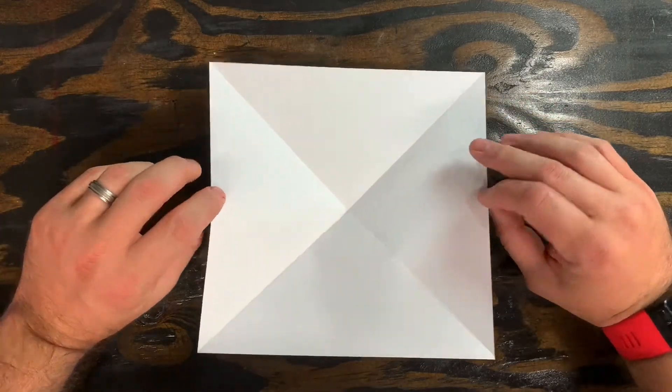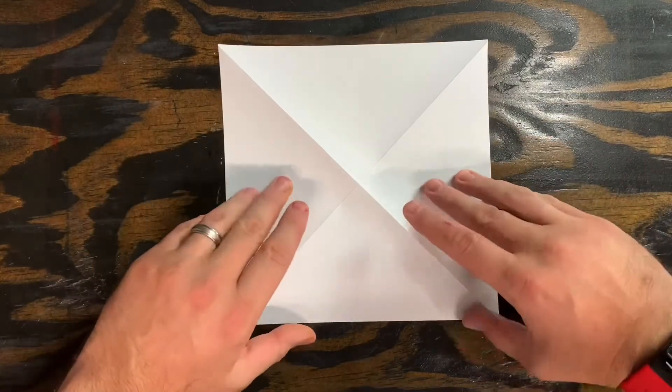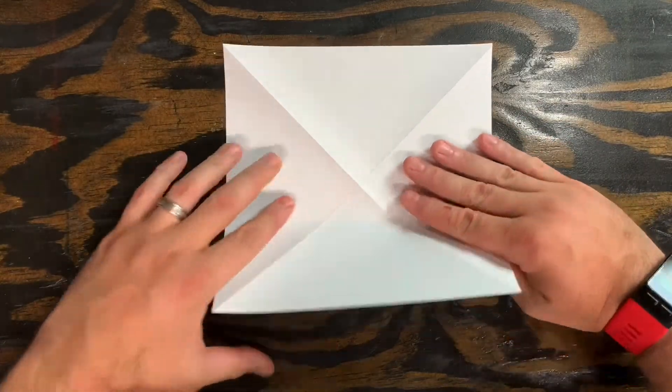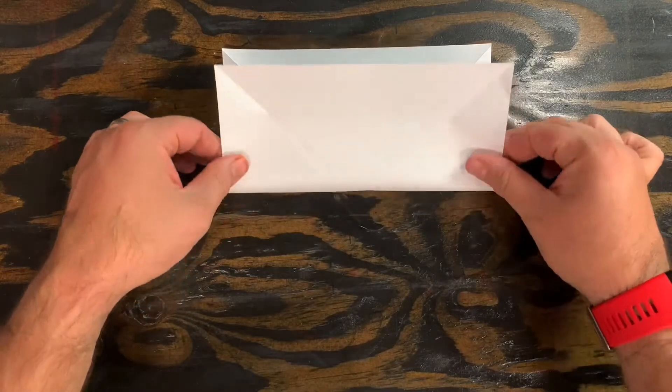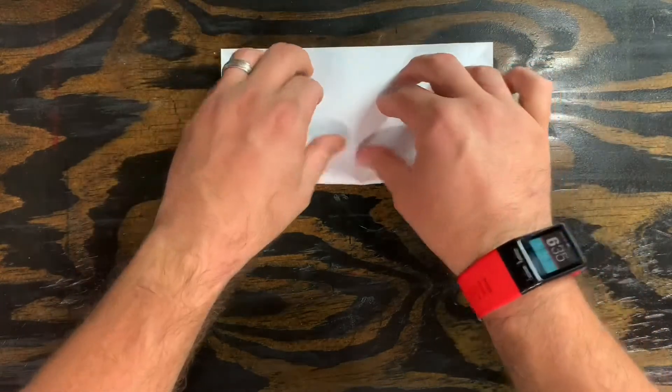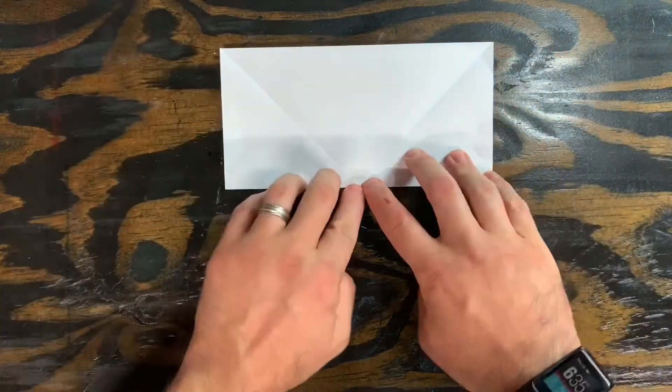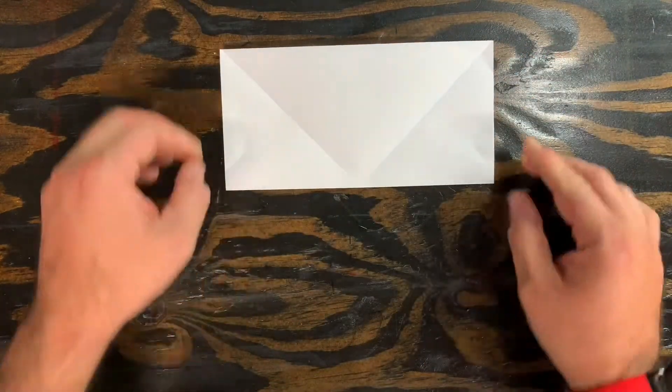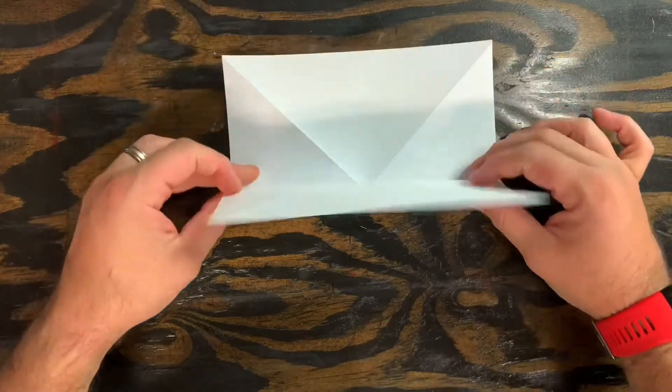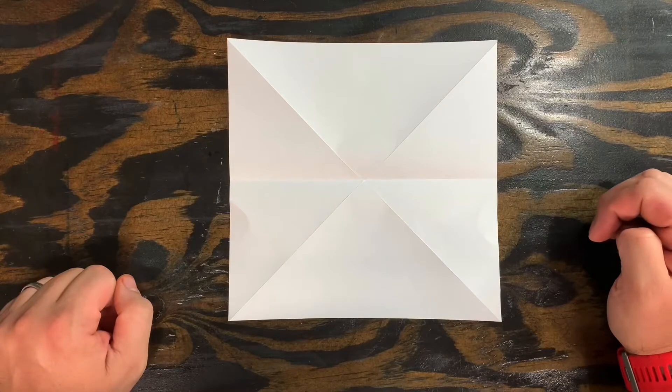Now we're going to flip this paper over and we're going to fold it in half. We're going to fold the bottom up to the top and again crease that fold really well.